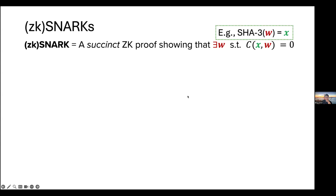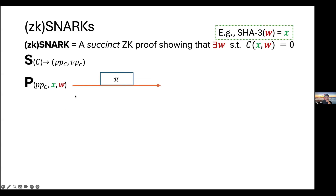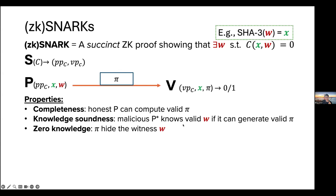A ZK SNARK consists of several algorithms. First is a setup or pre-processing algorithm that takes the description of the circuit and generates proving parameters and verification parameters. Then there is a prover algorithm that takes some public input and secret witnesses and generates a proof. There is also a verification algorithm that takes this proof and public input and checks whether the proof is valid.